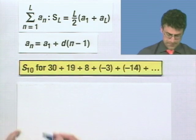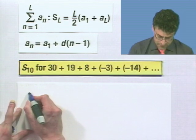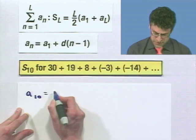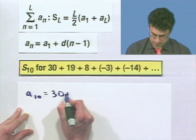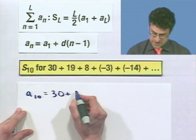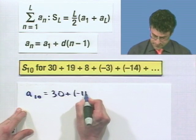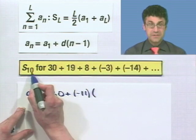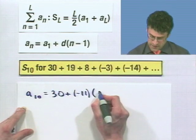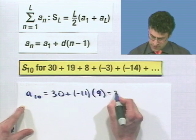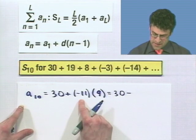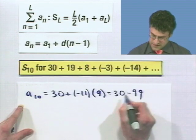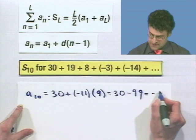And so all I've got to do now is find the last term, which I can do by saying that a_10 is equal to a_1, which is the first term, 30, plus d, that's the common difference we found, which is negative 11, times n minus 1. Well I'm looking for an n of 10, 10 minus 1 is 9. And so I see what? I see 30 minus, and then 11 times 9 is 99. And so 30 minus 99 is negative 69.